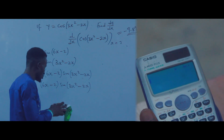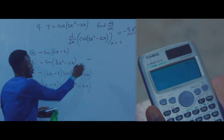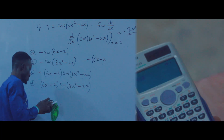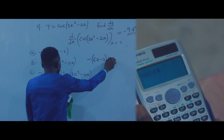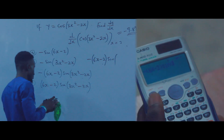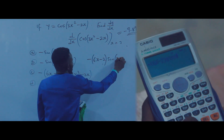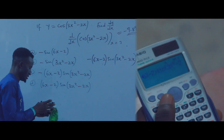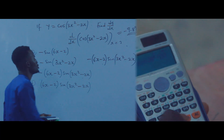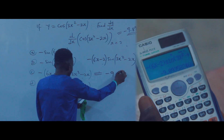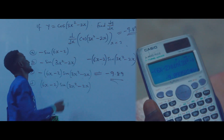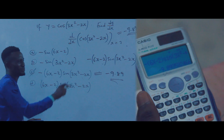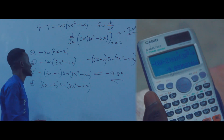Press AC and go to option C. Press minus, open the bracket, press 6, then Alpha X, then minus 2. Close the bracket and press equals. Option C gives minus 9.89, which is the same as our question result. If you check option D, it gives positive 9.89, not minus 9.89. So the correct answer is option C.